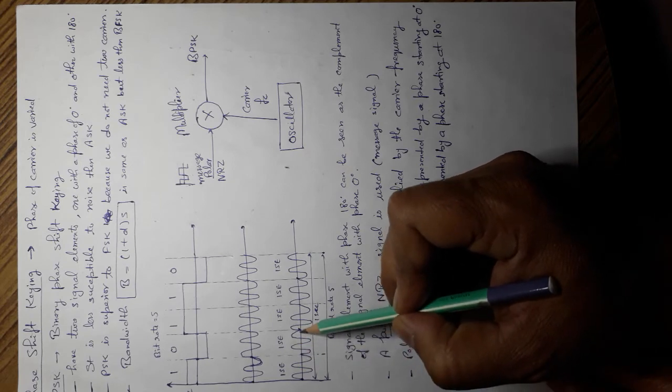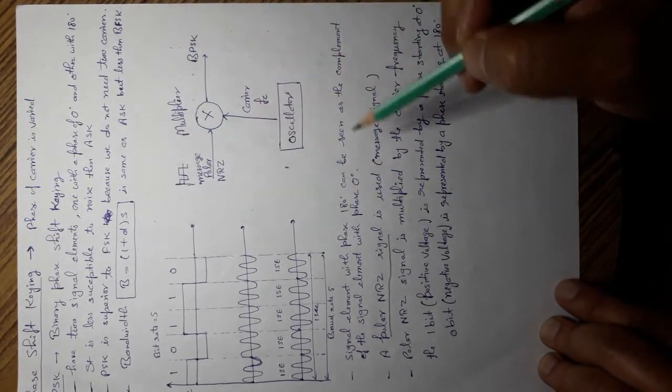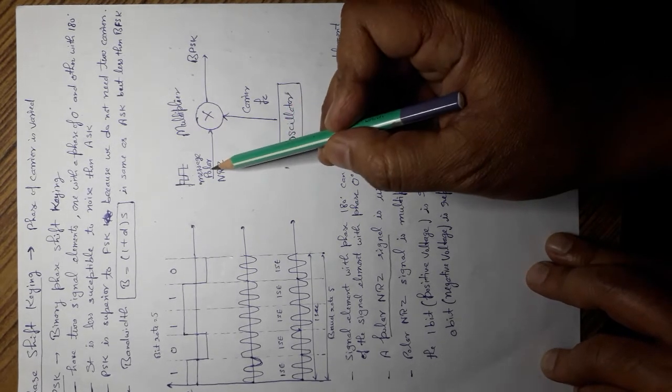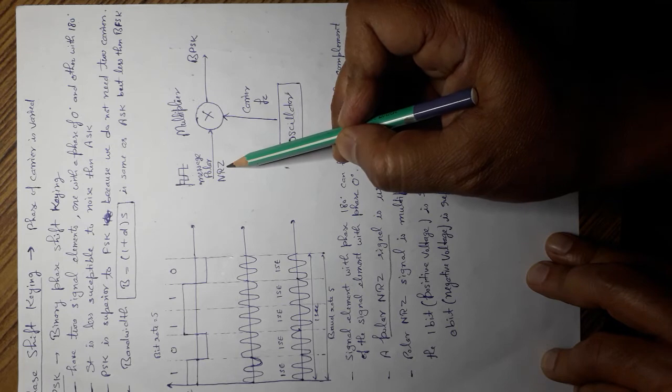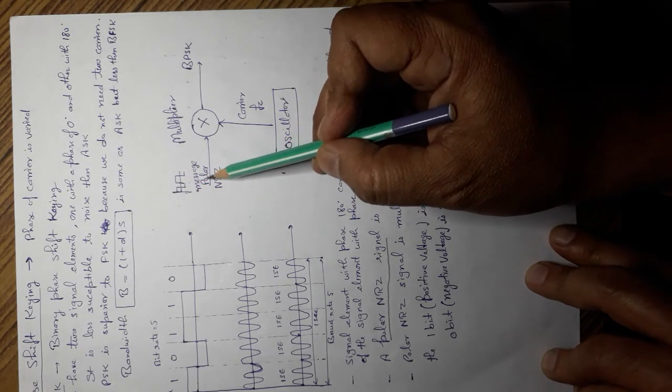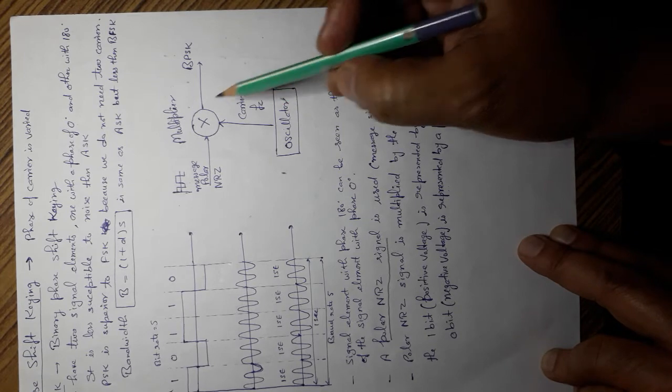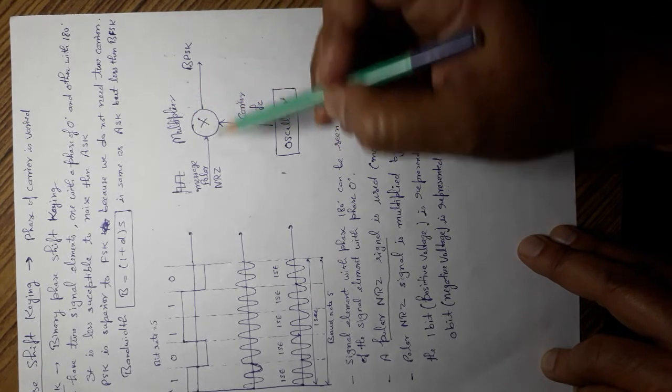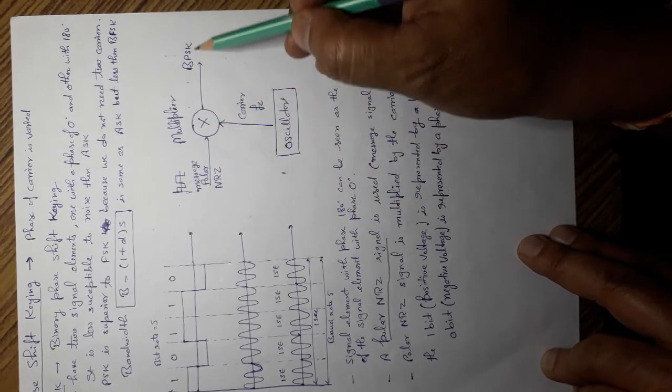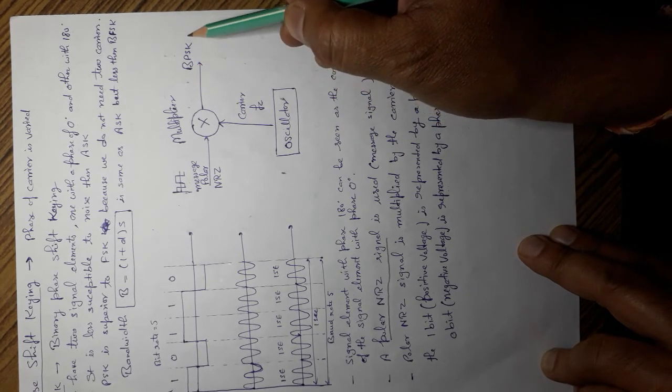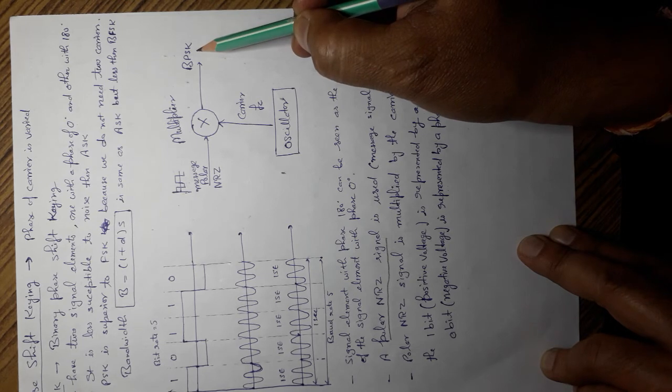This one is the basic block diagram for the phase shift key: message polar non-return to zero signal, carrier frequency, this one is the multiplier. We will get a BPSK signal at the output.